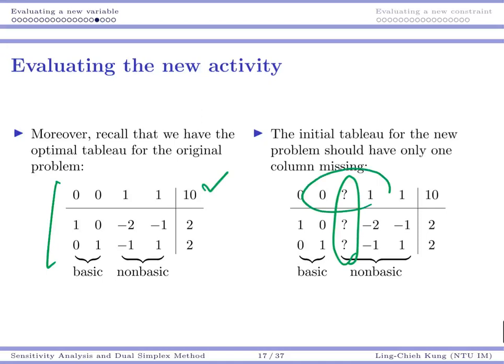This part, this particular number, must have something to do with c_B transpose A_B inverse A_j minus c_N transpose. I do know what should be here for nonbasic variables. I just need to do some calculation. I also have the formula for the bottom one, A_B transpose A_N.